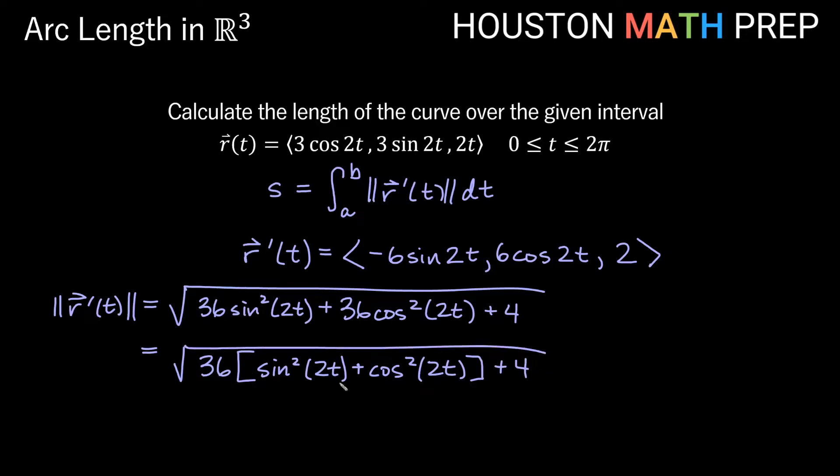Now what you might notice here is we have a Pythagorean identity. If we factor out our 36, we really get 36 times sine squared of two t plus cosine squared of two t. So 36 times that plus four. And remember this is a Pythagorean identity that equals one. So we get 36 times one plus four. So that'll give us actually the square root of 40. Or if you prefer to reduce that, we could go ahead and pull out the square root of four. We could say 2 root 10 here.